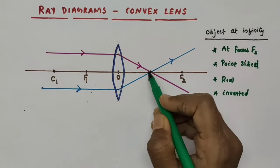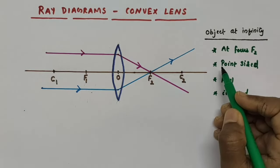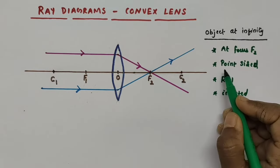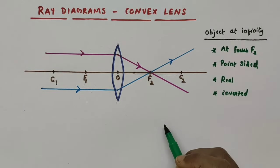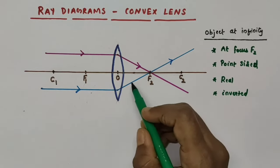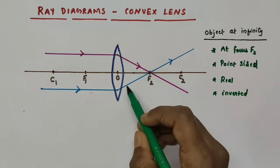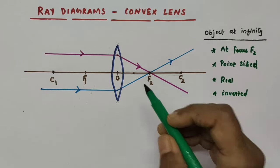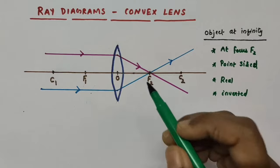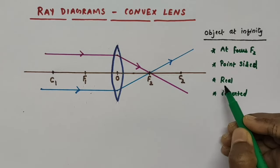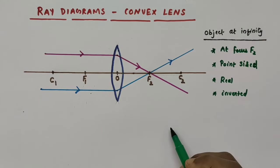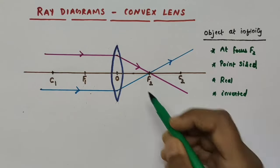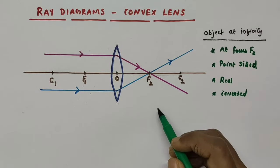The image will be a highly diminished or point-sized image. Actual intersection of these two refracted rays is taking place, so we can say the image formed is a real image, and it will be an inverted image.